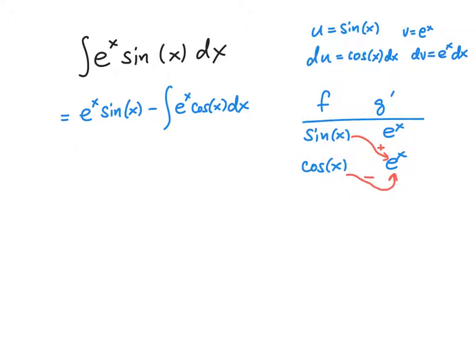Here, cosine x and e to the x have positive signs in front of them. So we will take this minus sign and put that there. And now we're going to integrate this — so that means we still have to integrate. You're going to see that you're going to have to do integration by parts again.